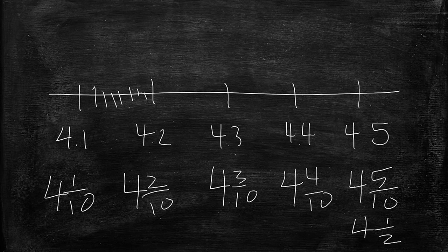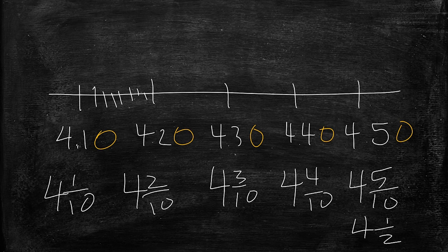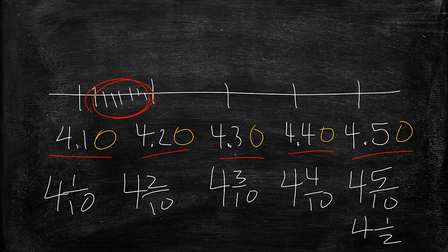Now you might wonder, well what's going to be in between these fractions? Well if you think about adding zeros to these, now what we've got, we still have four and four tenths, four and five tenths, but we can think about it differently. We can think about four and ten hundredths, four and twenty hundredths, four and thirty hundredths, four and forty hundredths, four and fifty hundredths. So what do you think the intervals in between the tenths are? Take some time to think about that as you approach your work this week.